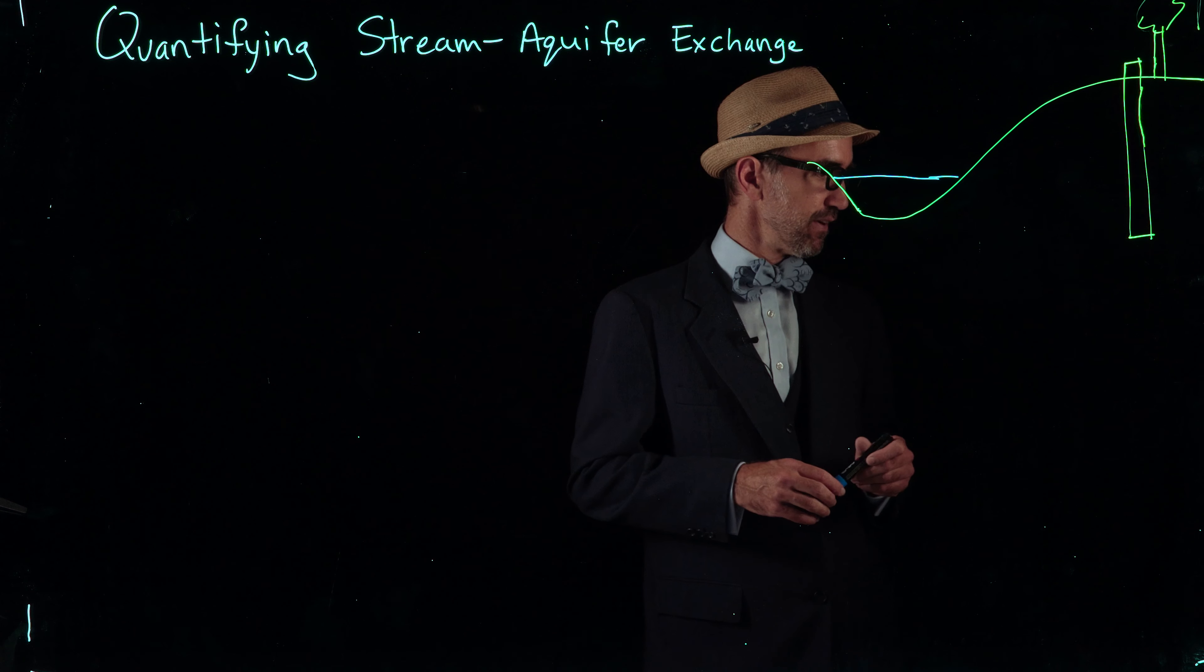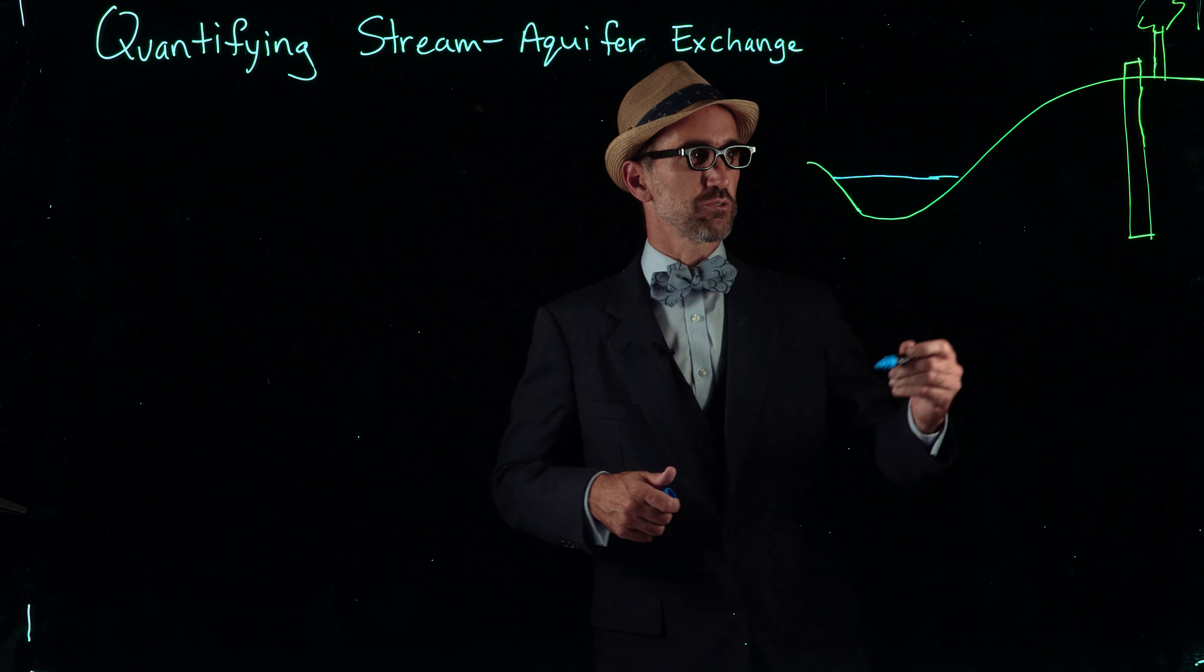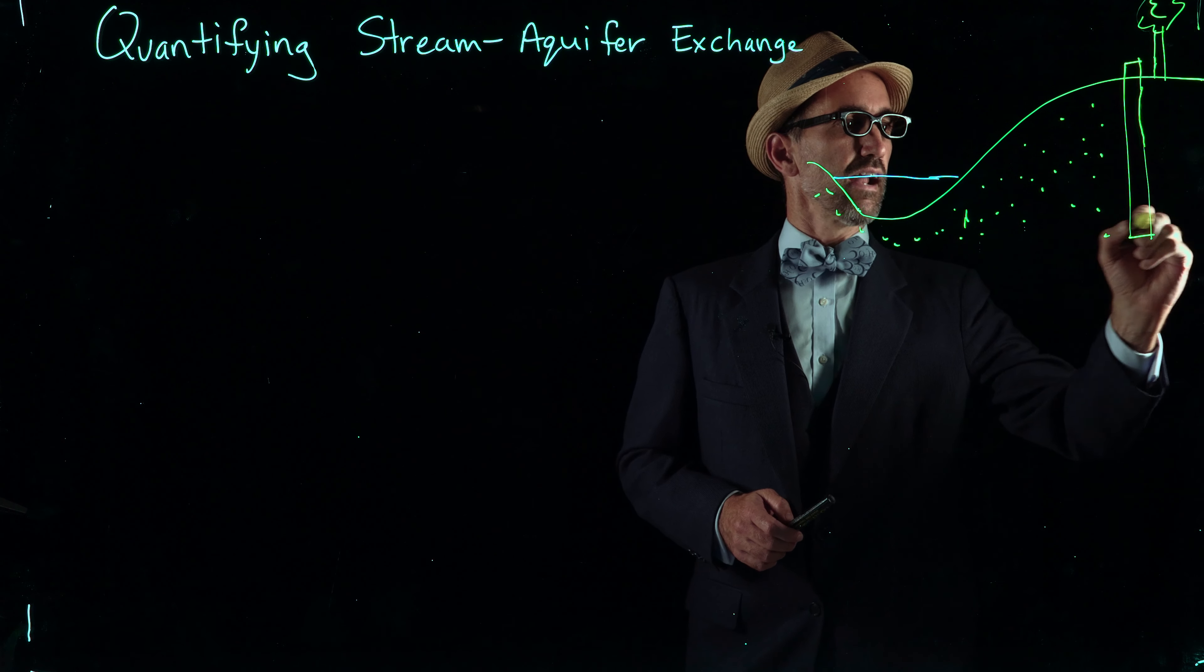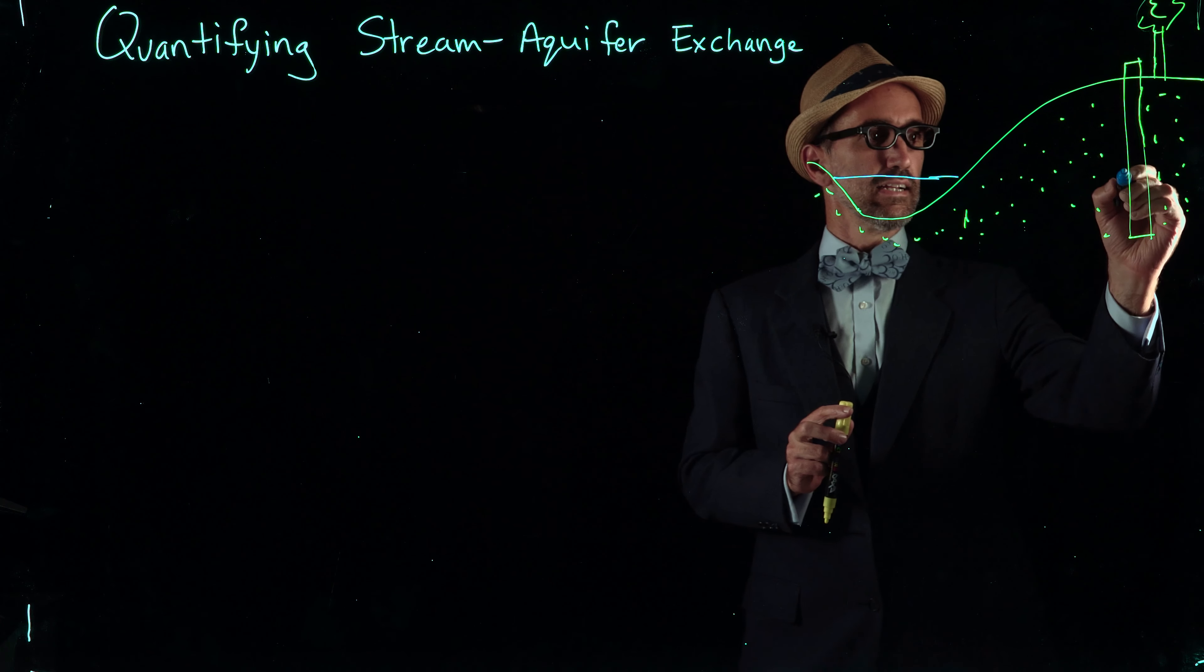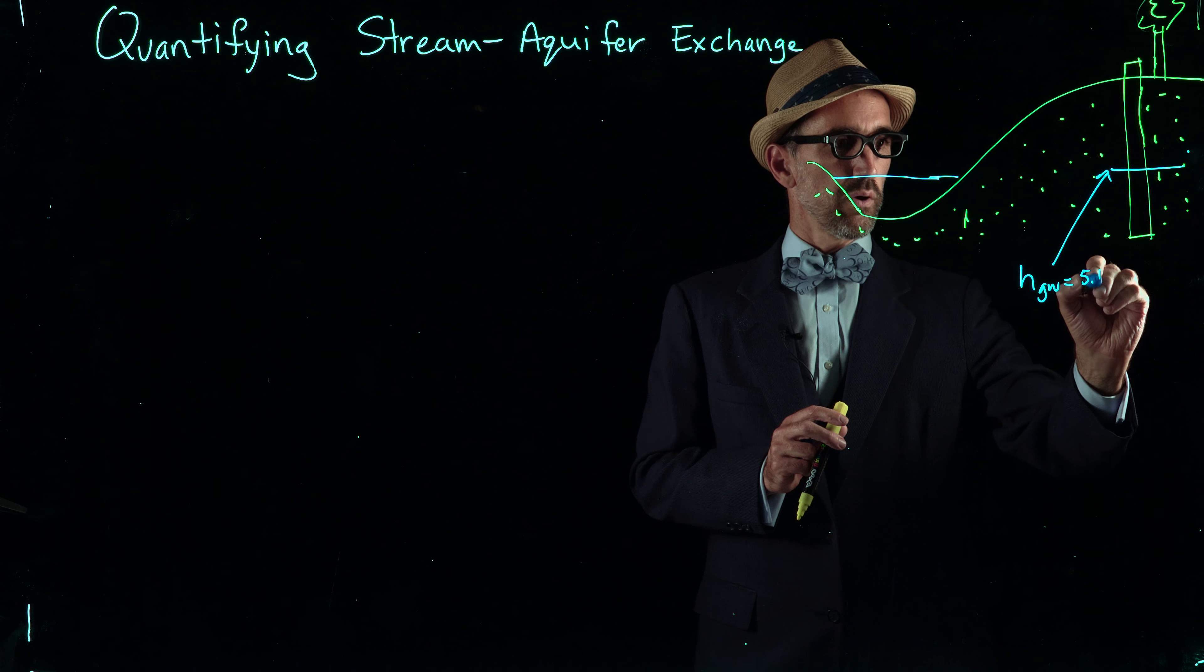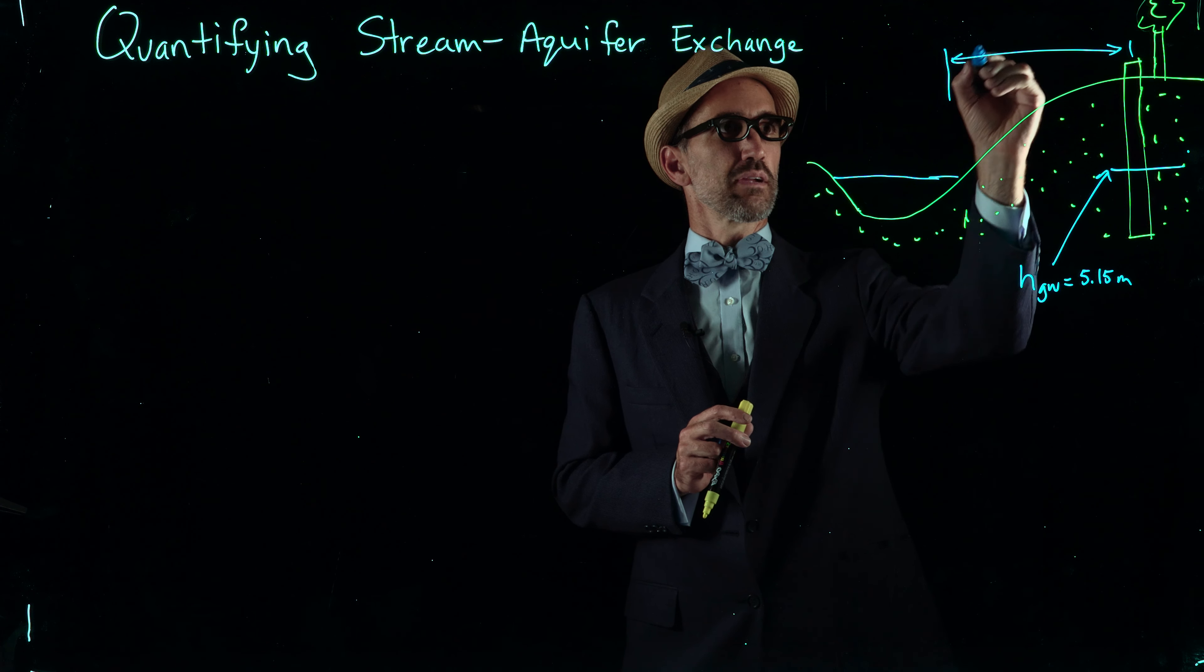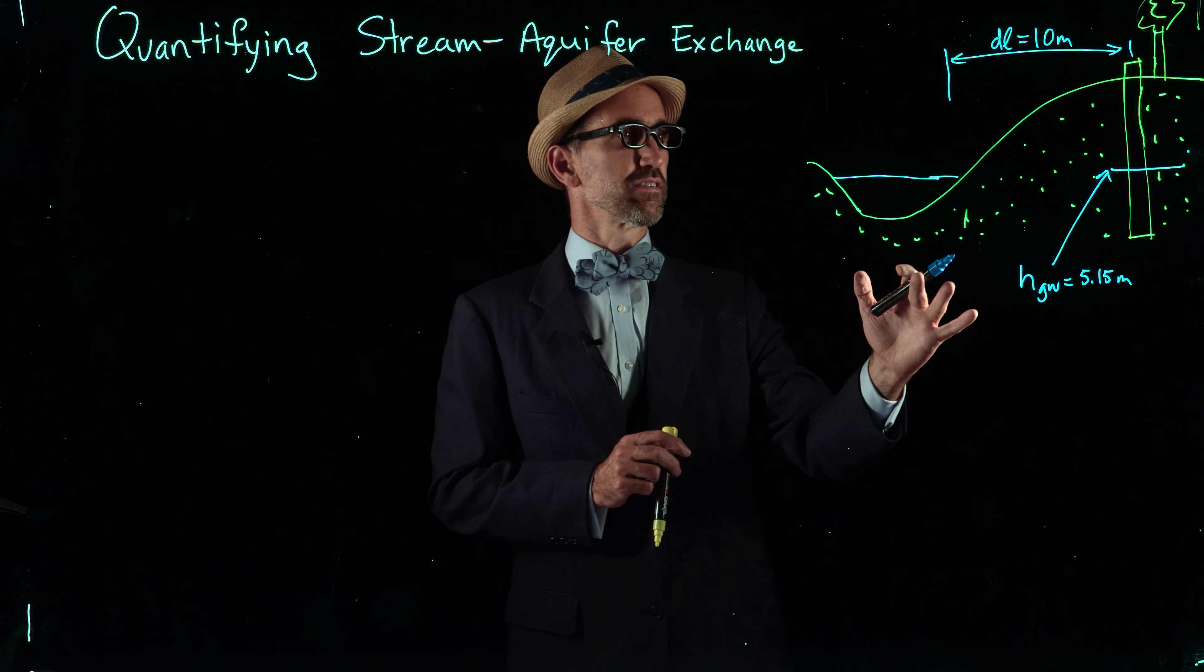On this image I've made a cross-section through a stream and aquifer. You can see the land surface with a tree. Imagine this as an aquifer around and below a stream. In that aquifer we have a well, and in that well the groundwater height is equal to 5.15 meters of elevation. The other thing we know is that the distance between that well and the stream, dl, is equal to 10 meters.